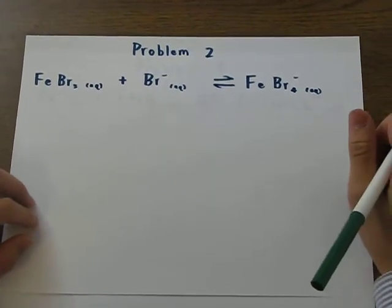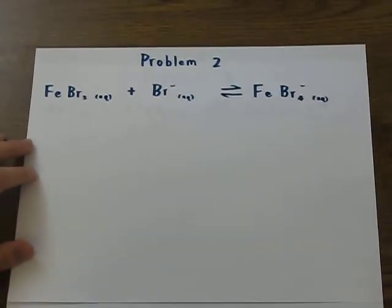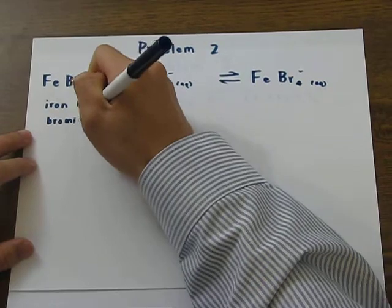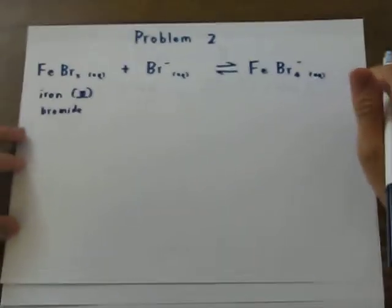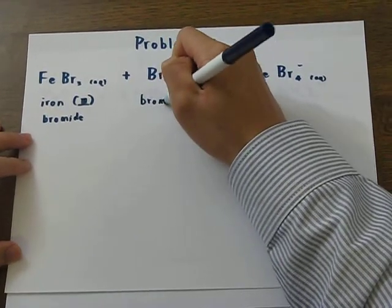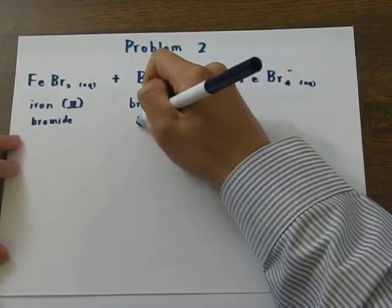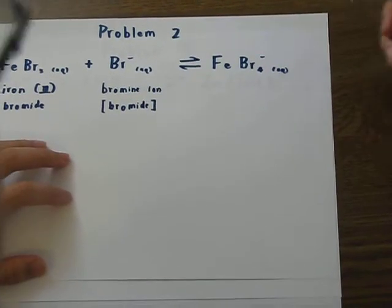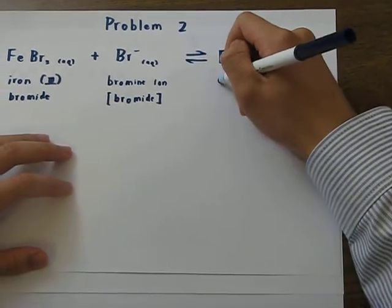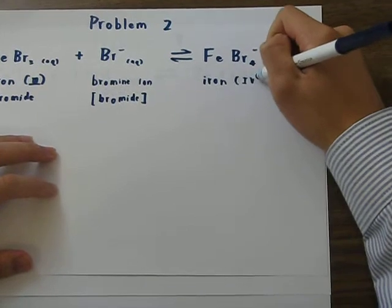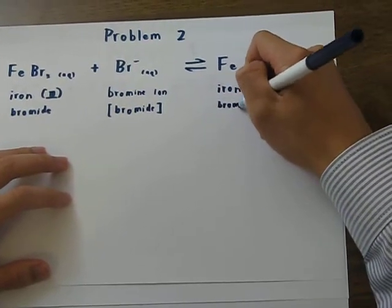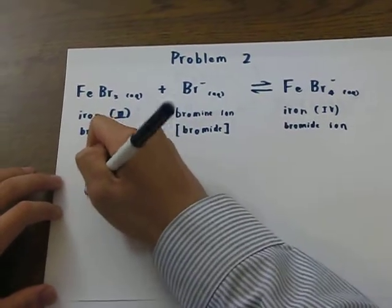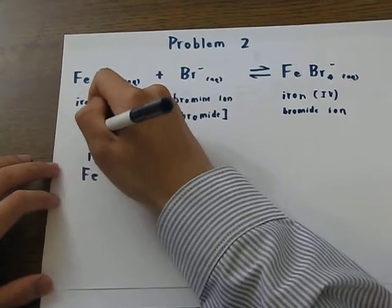Problem number two. We have here, we have iron-3-bromide, more cordially known as ferric bromide, if you will. Next, we have the bromine ion, or you can call it bromide. As in, bromide if I join. Next, we have iron-4-bromide ion. Great. So we did the exact same thing, and we draw Lewis structures, right now. For iron-3-bromide, we have iron in the middle, which is Br.